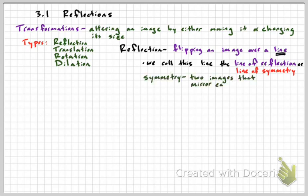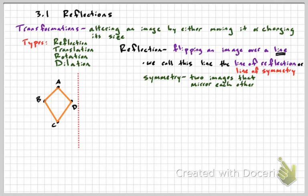Symmetry is two images that mirror each other. The biggest thing to know is that the line of reflection is what you reflect over. So imagine we have this diamond-shaped figure ABCD, and we want to reflect it over that red dotted line. The original figure and the new reflection figure are equidistant — the same distance from the line of reflection.